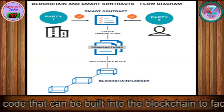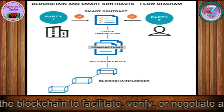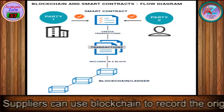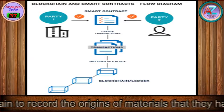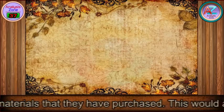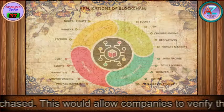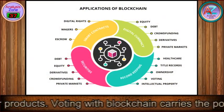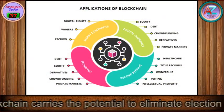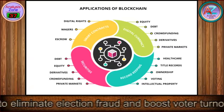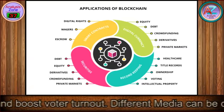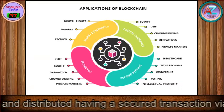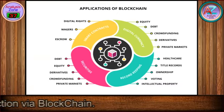A smart contract is a computer code that can be built into the blockchain to facilitate, verify, or negotiate a contract agreement. Suppliers can use blockchain to record the origins of materials that they have purchased, allowing companies to verify the authenticity of their products. Voting with blockchain carries the potential to eliminate election fraud and boost voter turnout. Different media can also be created and distributed via secure blockchain transactions.